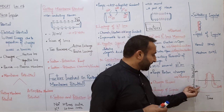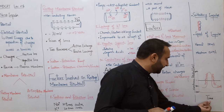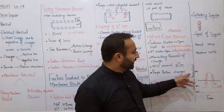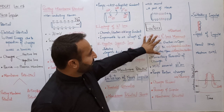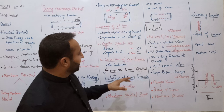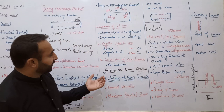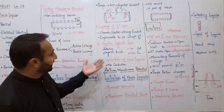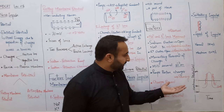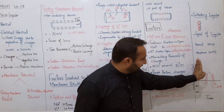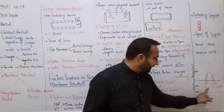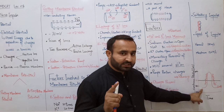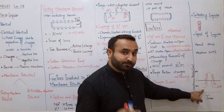ایک graph کی مدد سے اس پورے process کو دیکھتے ہیں - x-axis میں time لیا ہے، y-axis میں membrane potential in millivolt لیا ہے۔ Active membrane potential 0.05 volts یا 50 millivolt ہوتا ہے۔ Graph میں: -50، -100، 0 اور +50 کے values ہیں۔ شروع میں resting membrane potential -70 millivolt تھا یعنی polarized۔